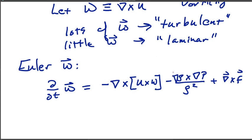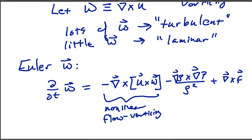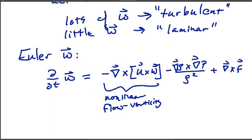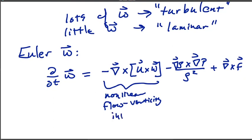And the time derivative, the vorticity can change to a vector quantity. It can change either from flow vorticity interactions. So these are nonlinear flow vorticity interactions. This is a way where the flow itself changes the vorticity. It can also change when there are gradients of density and pressure that are not aligned with each other.